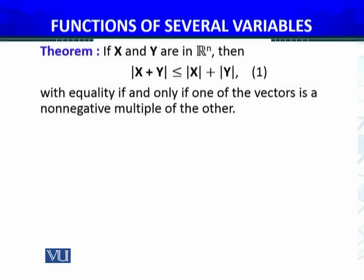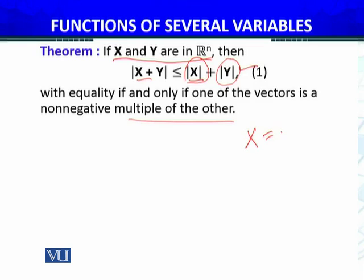The theorem states: if X and Y are in Euclidean space R^N, then the absolute value of X plus Y is always less than or equal to the absolute value of X plus the absolute value of Y — that is, the magnitudes of vectors X and Y. Equality holds if and only if one of the vectors is a non-negative multiple of the other, meaning X equals a non-negative scalar multiple of Y — in other words, the vectors are parallel.